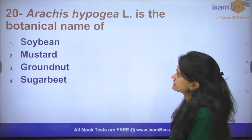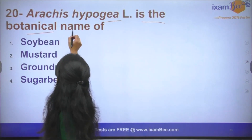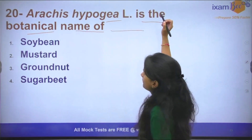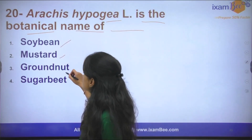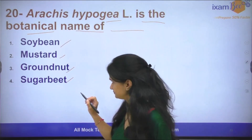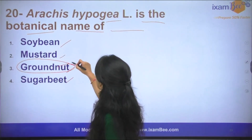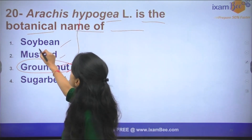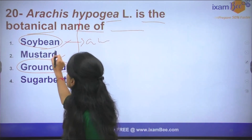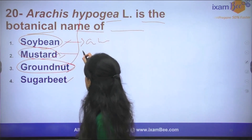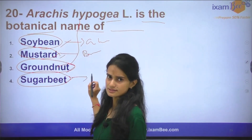The next question: Arachis hypogea is the botanical name of which crop? Is it soybean, mustard, groundnut, or sugar beet? The answer is groundnut — groundnut's scientific name is Arachis hypogea. Soybean is Glycine max, mustard is Brassica campestris, and sugar beet is Beta vulgaris.